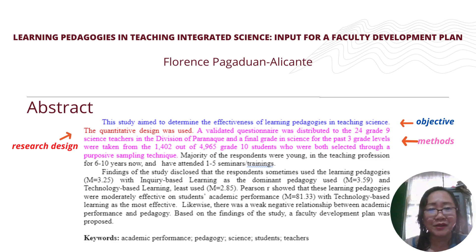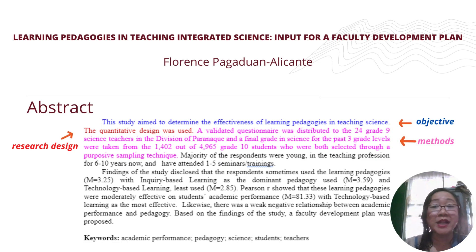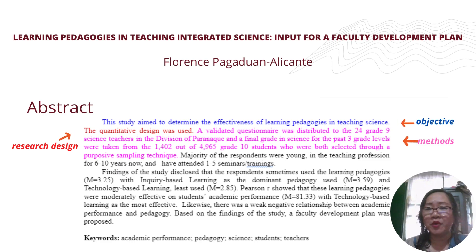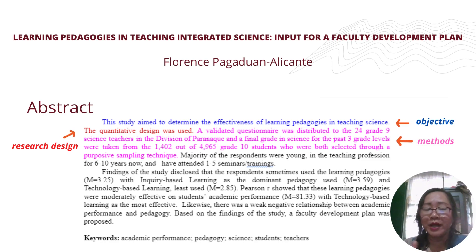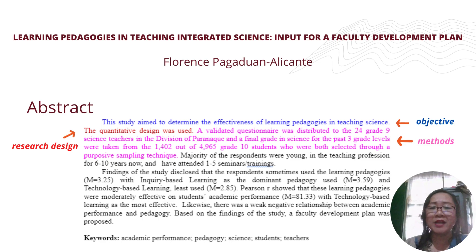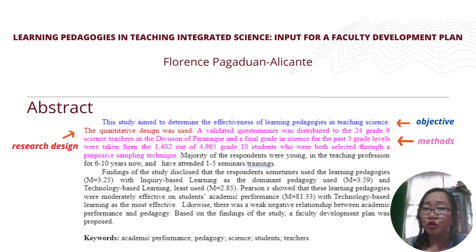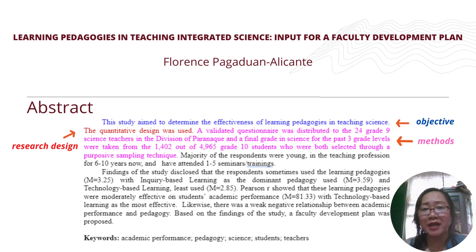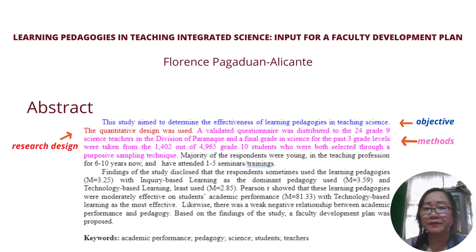If you are doing experimental research, you may include here the materials and the procedure that you used. You can also describe the setups — for example, if you use control and experimental groups, explain here how you conducted your experiment with each group.